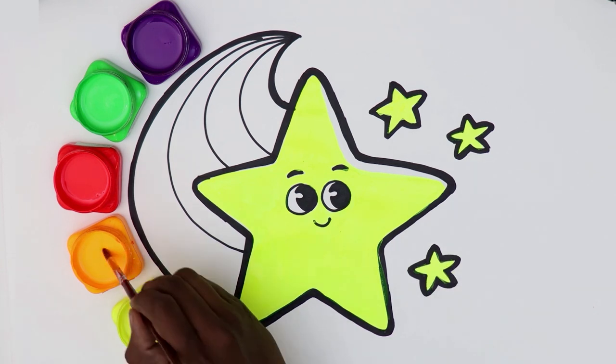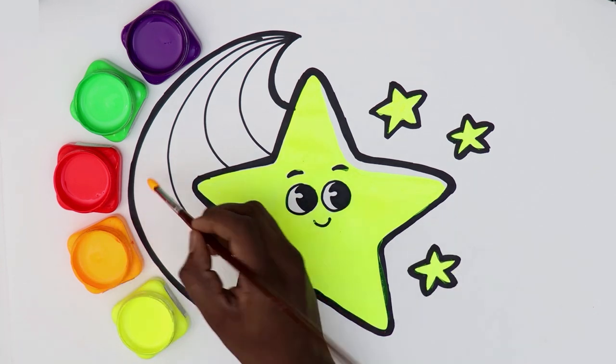Let's paint the other stars yellow as well! Let's paint the trail of the shooting star! First, we'll start with the colour yellow!